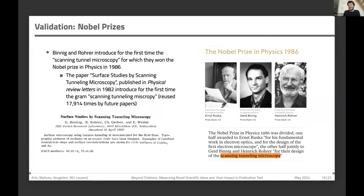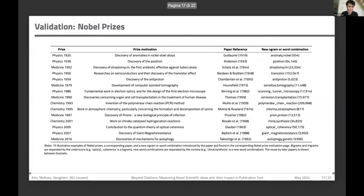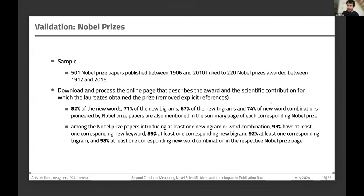For example, what was the first paper introducing 'scanning tunneling microscope'? It was a paper published in 1986, authored by two Nobel Prize winners who won the prize thanks to that discovery. This validates the fact that OpenAlex works really well in helping to detect new scientific ideas. We found many other examples of Nobel Prize papers that introduced for the first time new words, new combination of words, new bigrams and trigrams. These words also appear in the motivation statement of the Nobel Prize.